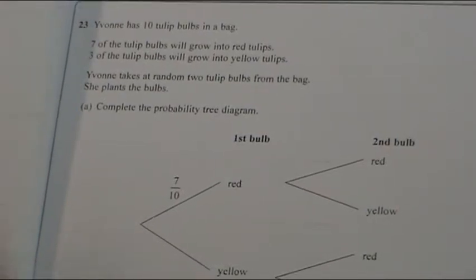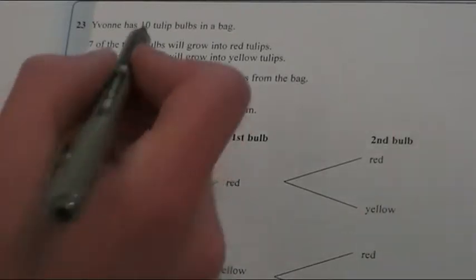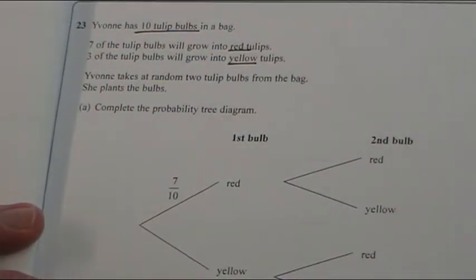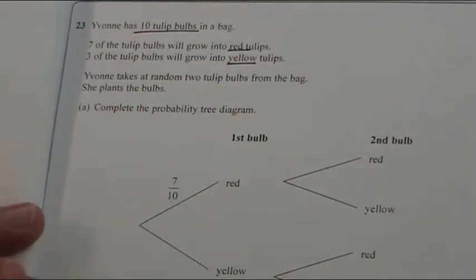Question 23 is a probability tree and we're told we have 10 tulip bulbs and they're either going to be red or they're going to be yellow, and she takes two tulips at random and she plants them.